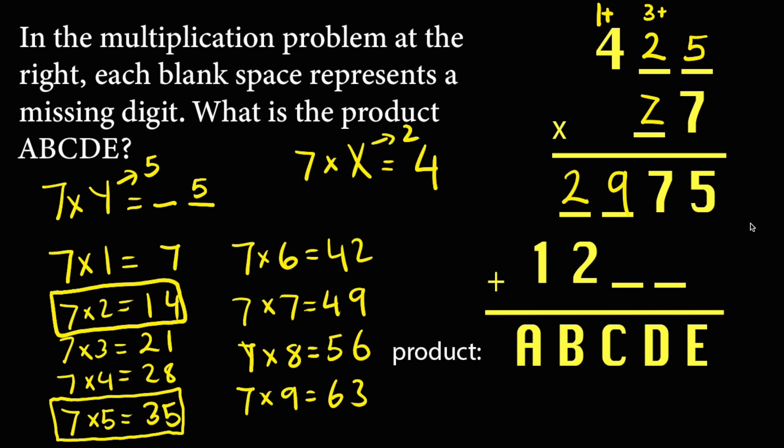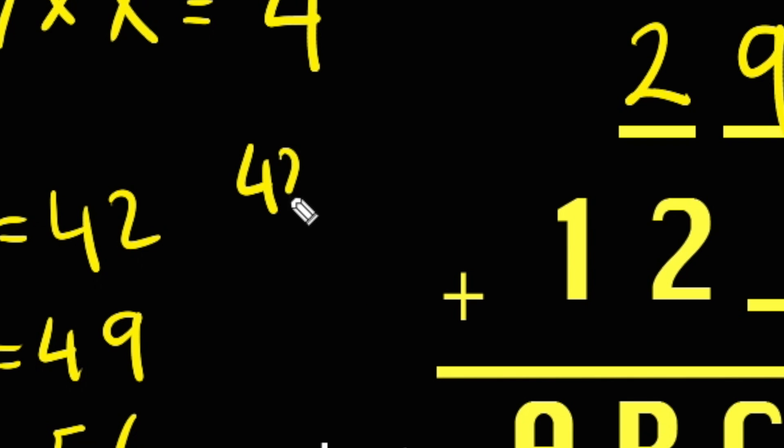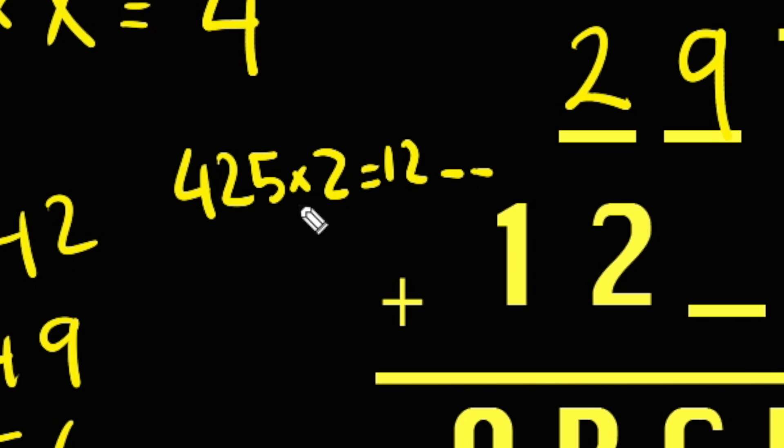For the second product line value, we know that 425 times z begins with 12. What number multiplied with 425 generates 12? This is very obvious and straightforward - z should be 3.